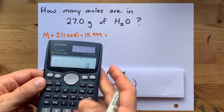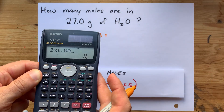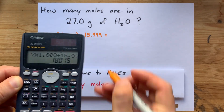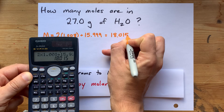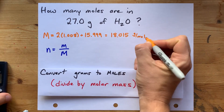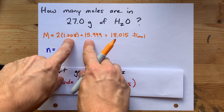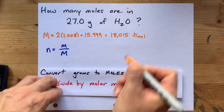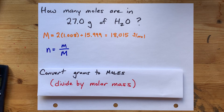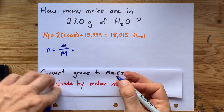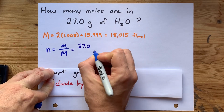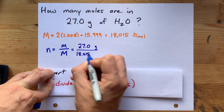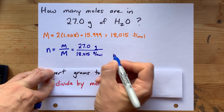Now we calculate that on the calculator: two times 1.008 plus 15.999. I get 18.015, and that's in grams per mole. I just want to point out that three decimal places being added to something else with three decimal places should give you three decimal places of precision.